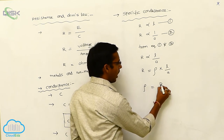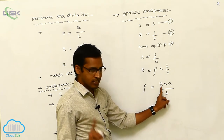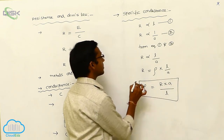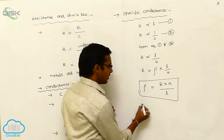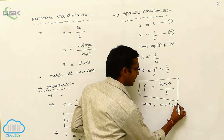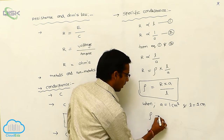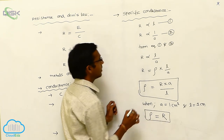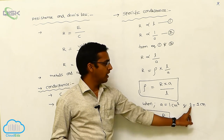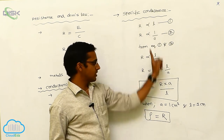Now, rho is equal to R into A by L, meaning specific conductance equals resistance into area of cross section by length. Specific conductance is denoted with rho. When the area is equal to 1 cm² and length is equal to 1 cm, then rho equals R. So when area of cross section and length of the tube are both equal to 1 unit, specific conductance equals resistance.